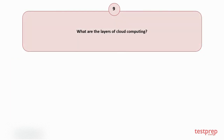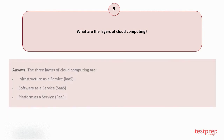Question number nine: What are the layers of cloud computing? The three layers of cloud computing are: one, Infrastructure as a Service; two, Software as a Service; three, Platform as a Service.